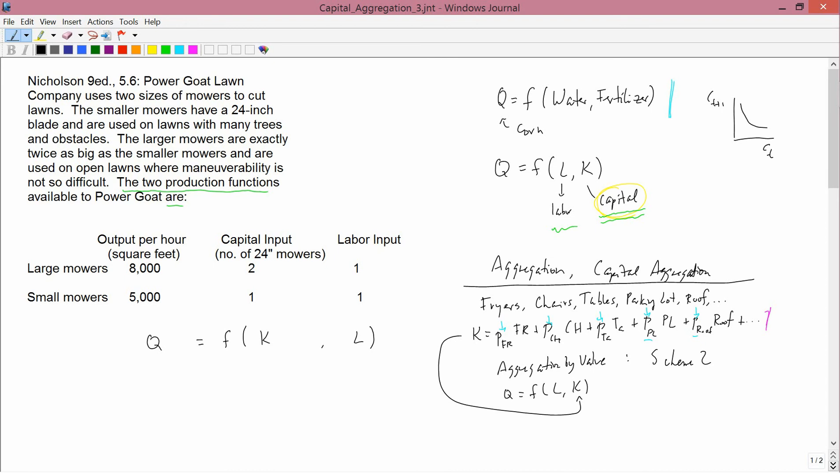So it doesn't make sense that a firm has two production functions. Now, the production function that Nicholson is using is this, q equals f of k and l. By the definition of a function, what that means is that if you know k and you know l, then you know q.